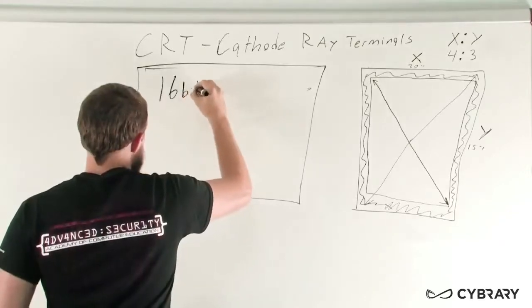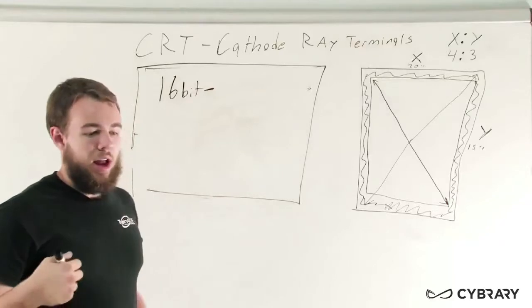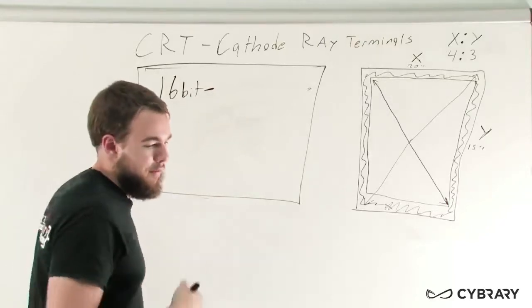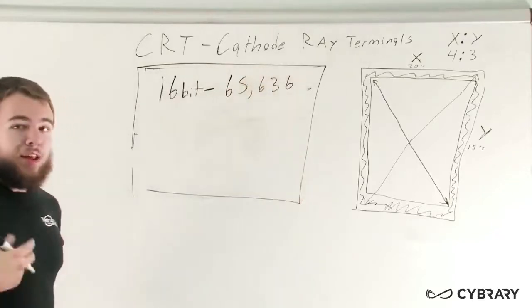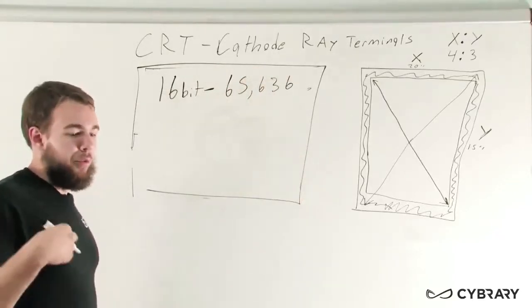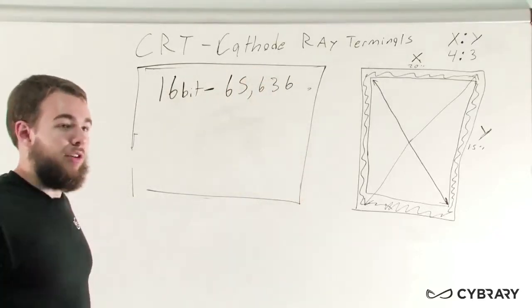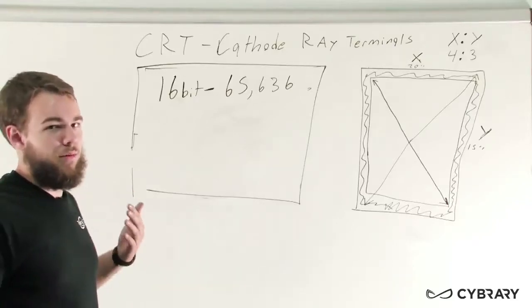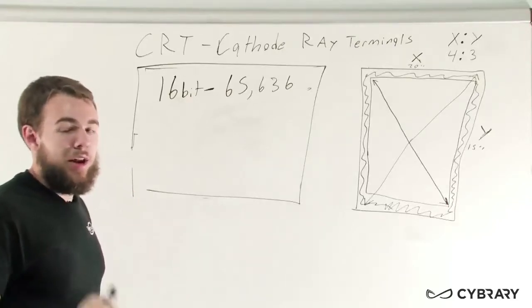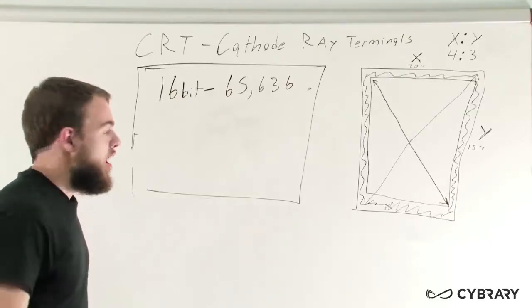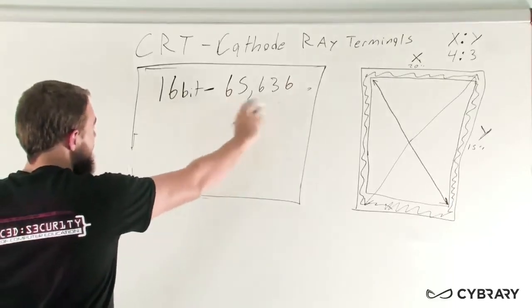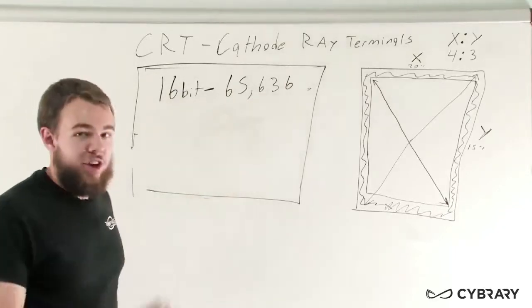A 16-bit color depth will actually support and display 65,636 different colors. So that actually seems like quite a lot. But when you think of colors, you think of just the standard Crayola colors: red, blue, green, Granny Smith green, sunshine orange. But each of those colors have different shades.